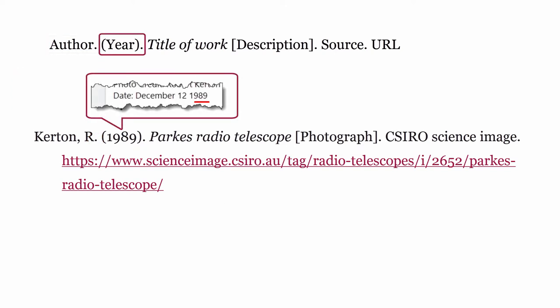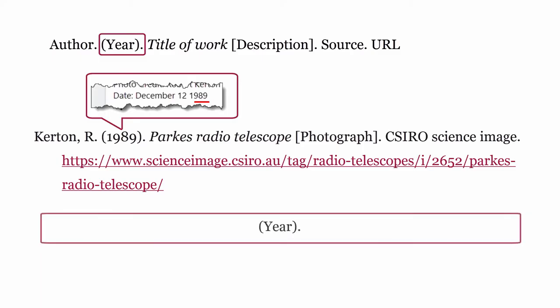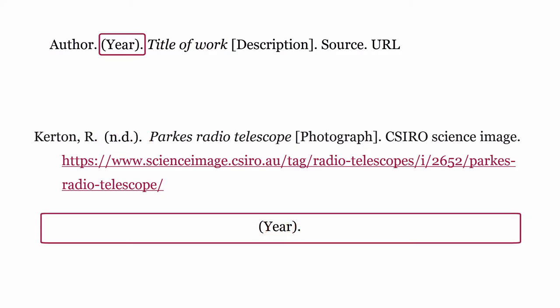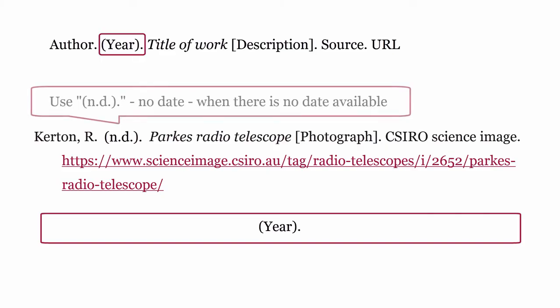The year is the year the image was published. This is formatted with the year placed within round brackets followed by a full stop. If there is no date available, you would use ND, no date.